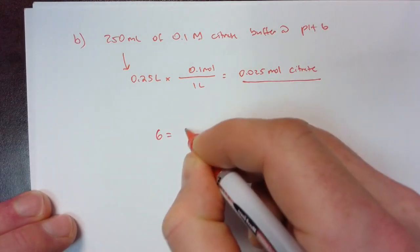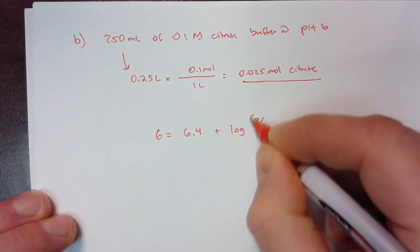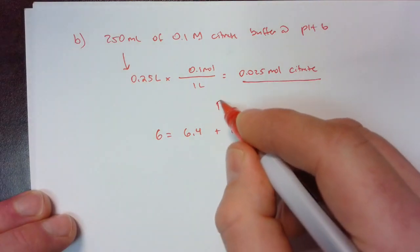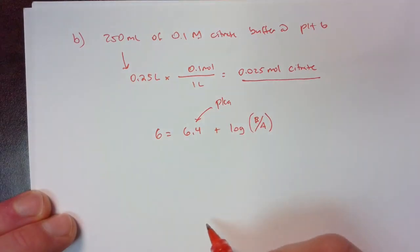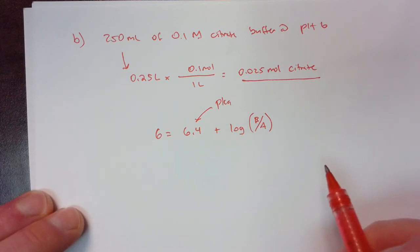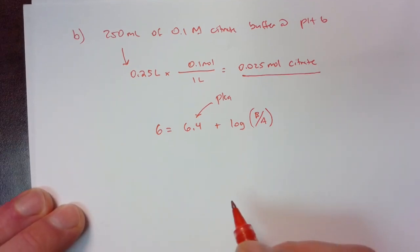And we're going to use Henderson-Hasselbalch just like we did with the other example. In this case, the pKa is 6.4. And this corresponds to the dibasic and tribasic citrate ions. And again, we're going to use sodium citrate for this. So it's going to be Na2 and Na3 citrate for each of these forms. And I'll show you what the molar masses are when we get to that point in the problem.